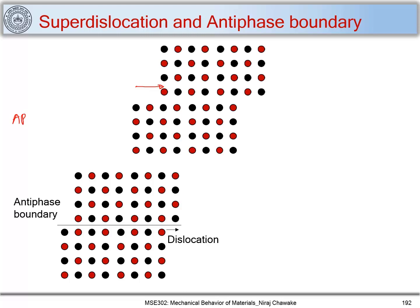In the first case, when we move by just one unit — a one-unit dislocation — we form like bonds (AA and BB) over each other at the boundary. This boundary is called the antiphase boundary, because in intermetallics the unlike atom bonding (AB) is preferred over like bondings (AA or BB). This antiphase boundary is a 2D defect or surface defect, analogous to the stacking fault in FCC structures.